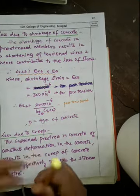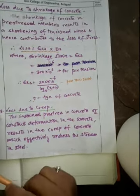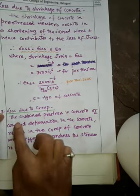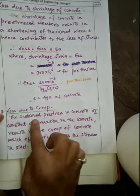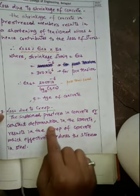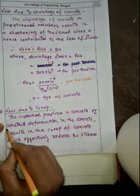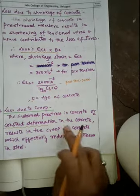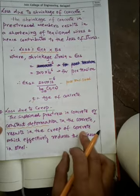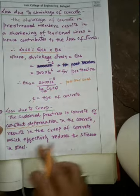The next important loss is loss due to creep. The sustained prestress in concrete causes constant deformation in the concrete, which results in creep of concrete, and this effectively reduces the stress in steel.